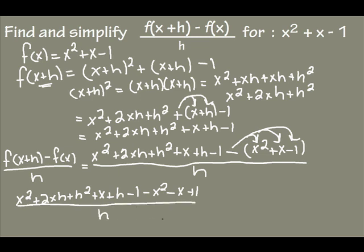Now my next job is to simplify the top. Well, I have an x squared and a negative x squared. I have a positive x and a negative x, and I have a negative 1 and a positive 1. So what I have left is...